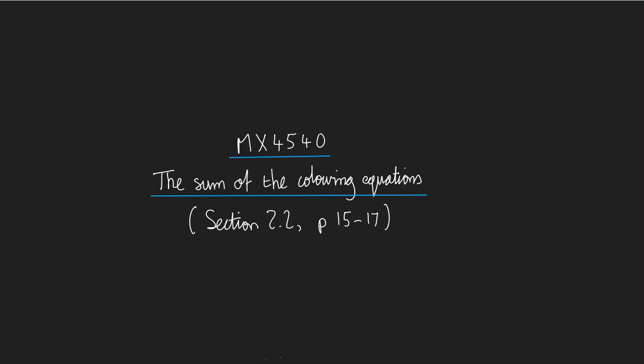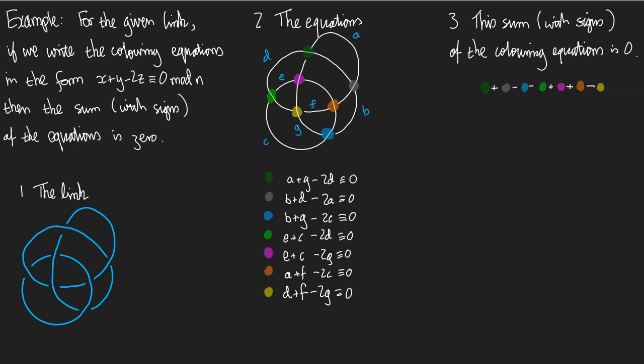Here is a mini lecture about the sum of the colouring equations, based on section 2.2 pages 15 to 17. We're going to explore a theorem that says that the sum of the colouring equations is zero. Let's see what that means in an example.